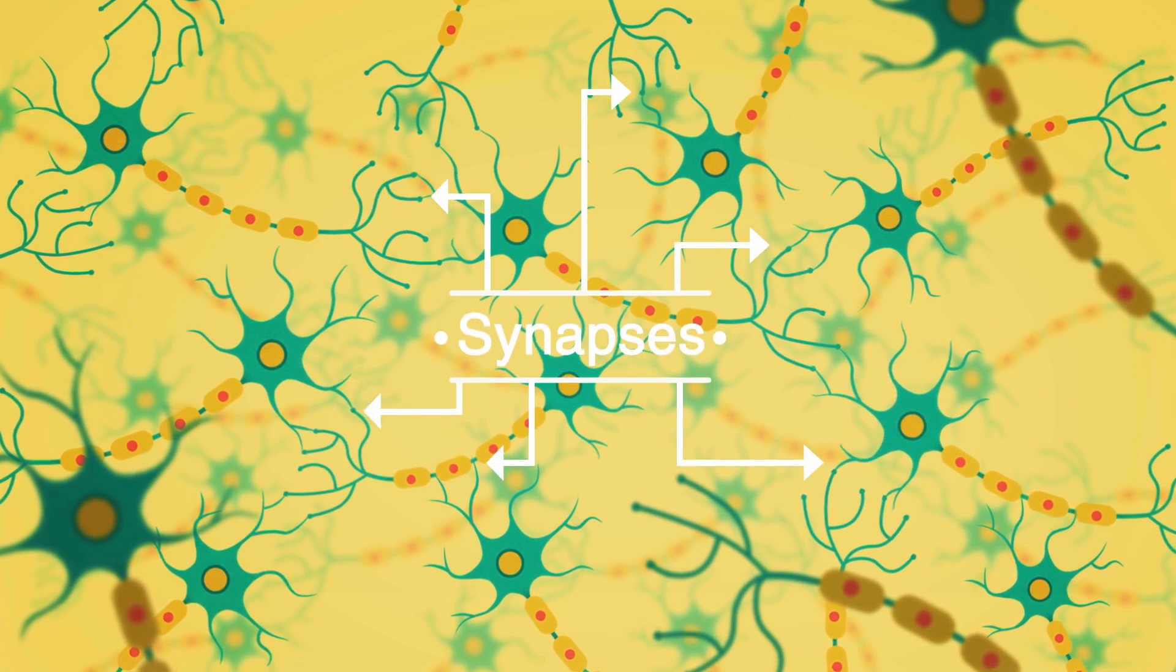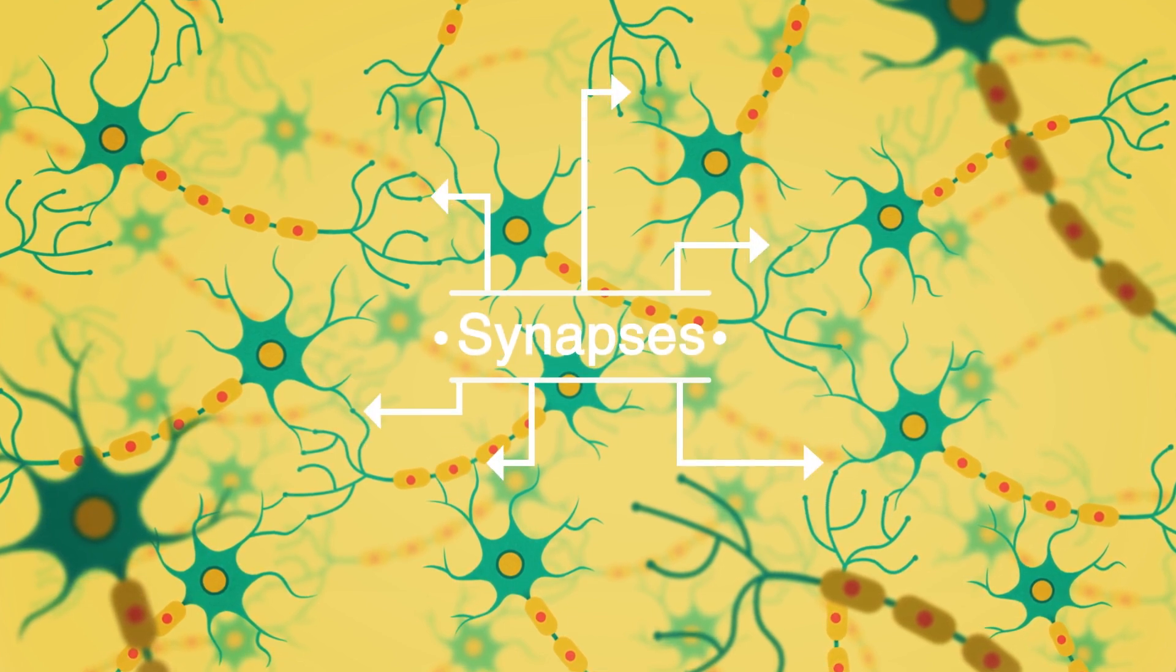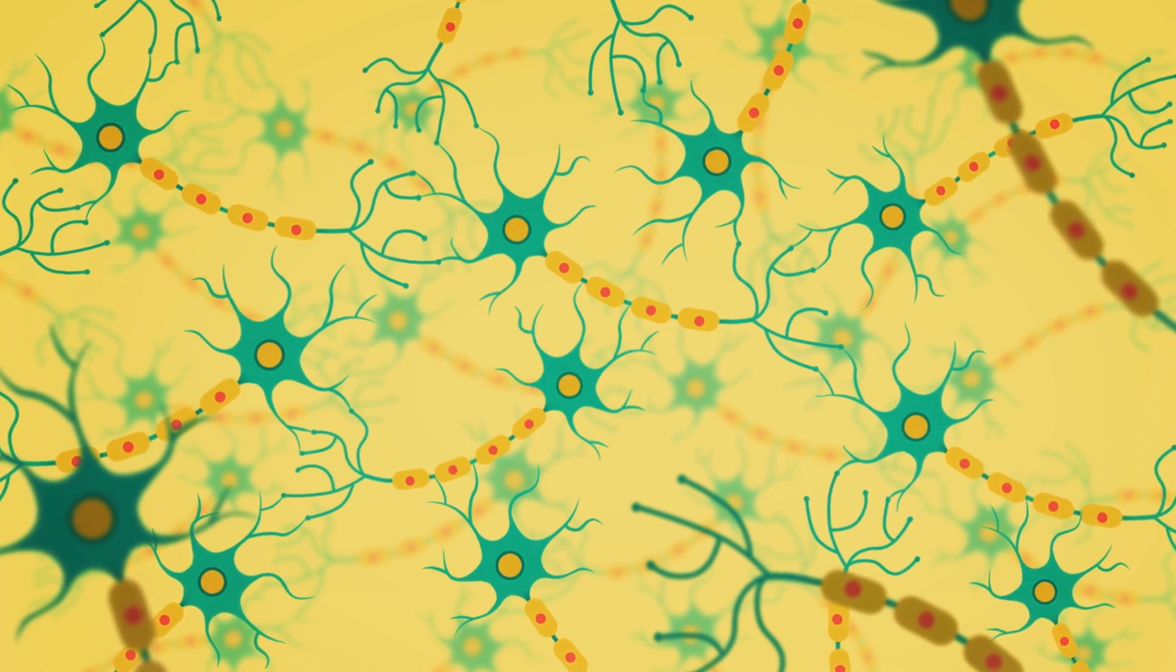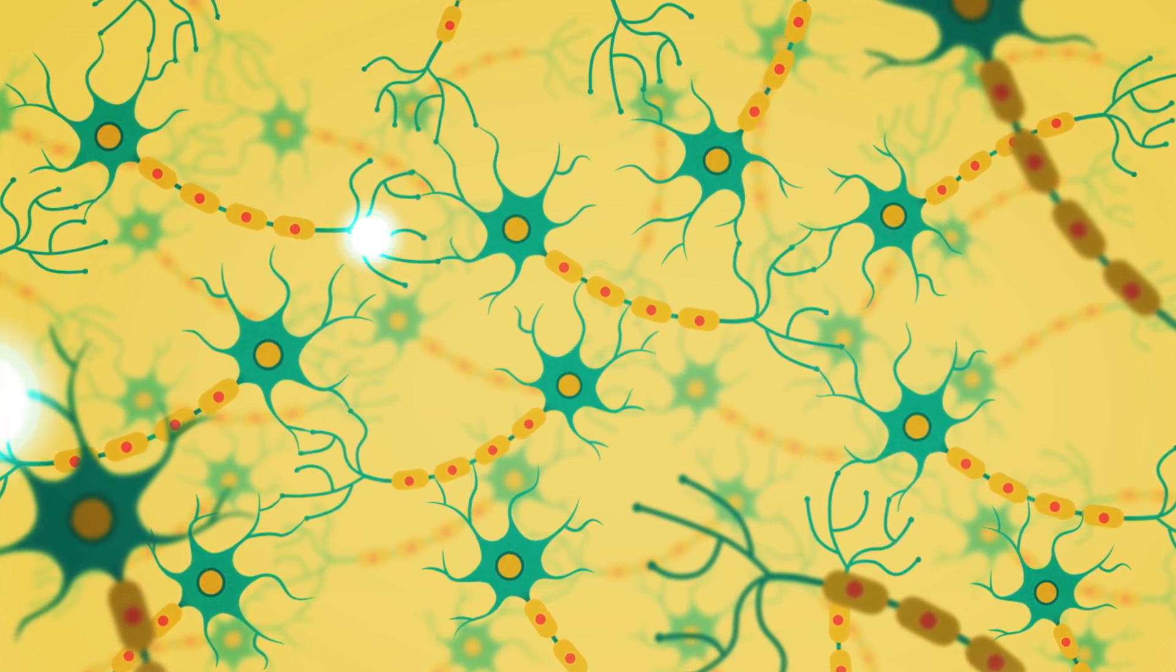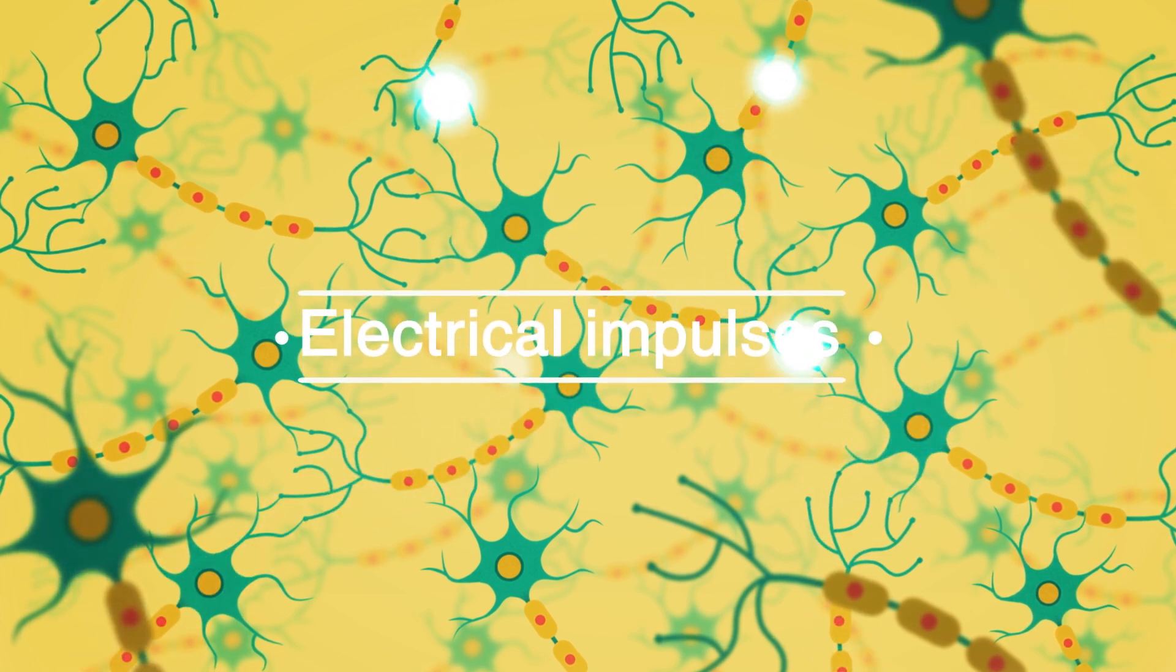These networks are a bit like the complex electrical circuits inside a computer. Messages travel down cells as tiny electrical impulses.